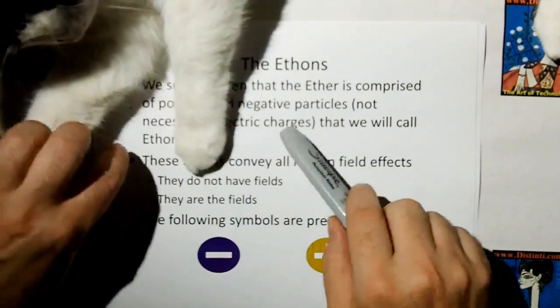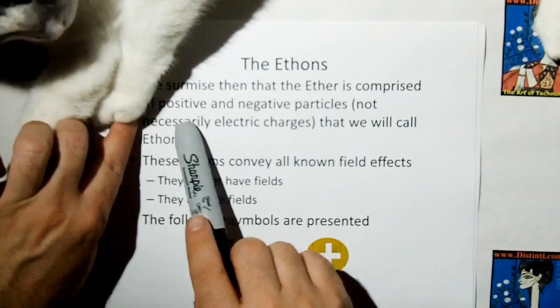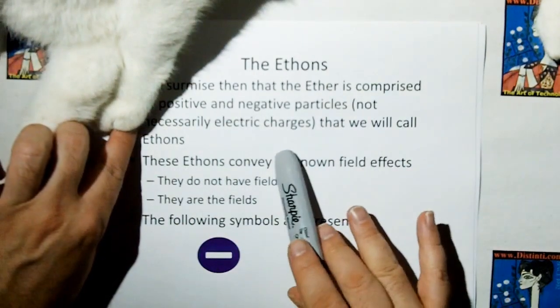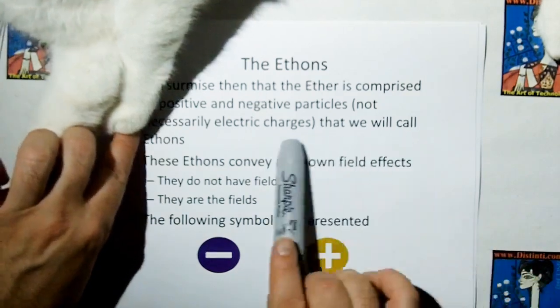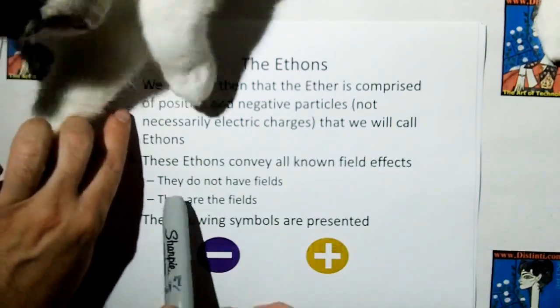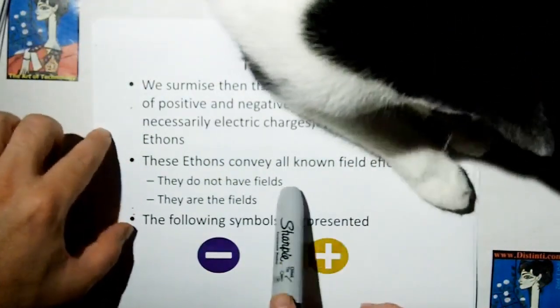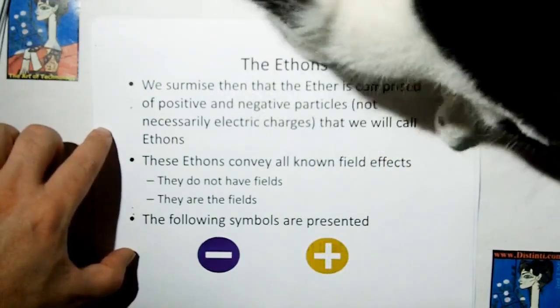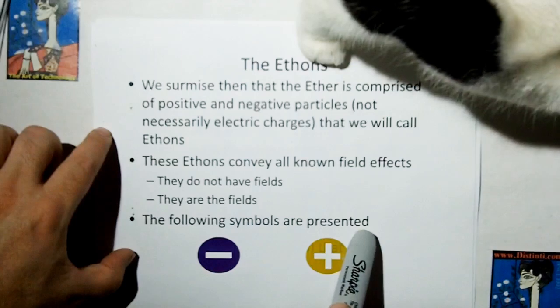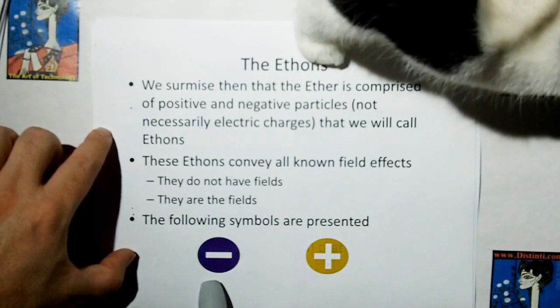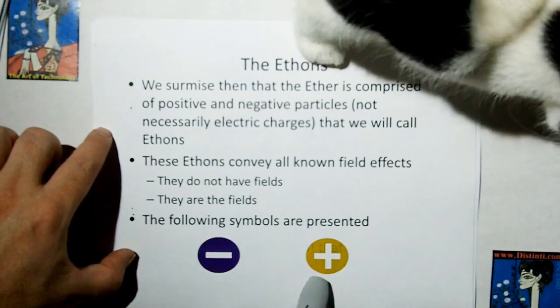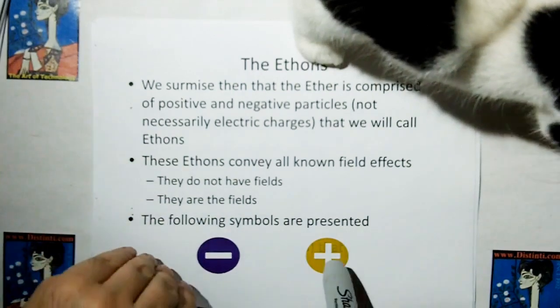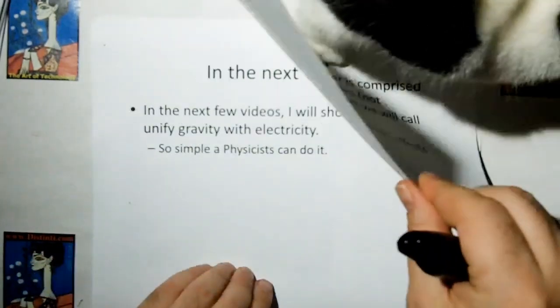And since we surmise that the ether is comprised of positive and negative particles, not necessarily electric charges, we're going to call these ethons. These ethons convey all known field effects, but they do not have a field because they are the fields. And the following symbols are represented. We're going to use a purple for negative ethons, and we're going to use, well, it's kind of like orange-yellow for positive ethons. I think that's supposed to be more of an orange.